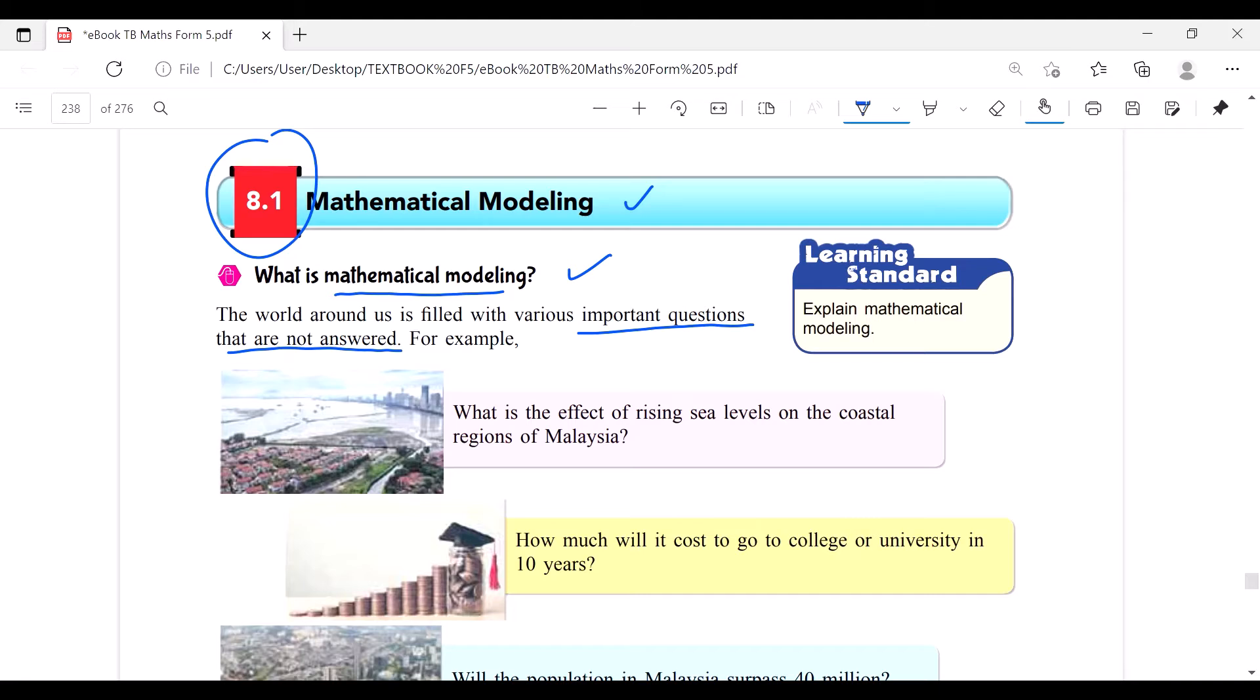Now let's have a look at some of the questions. When you grow up, maybe you ask: What is the effect of rising sea levels on the coastal regions of Malaysia? In Keningau we don't have seas, but in KK and other areas, what happens if the water level rises? Will they get flooded? What's the effect?